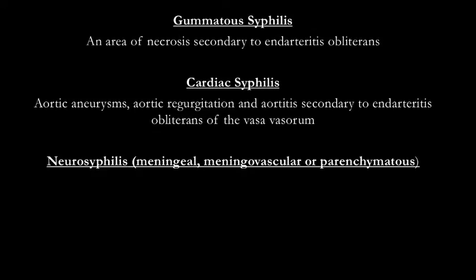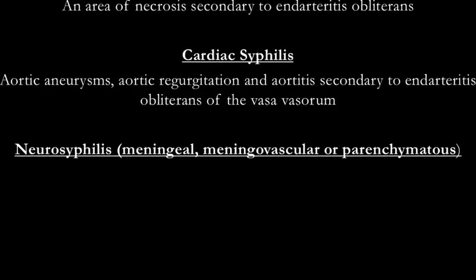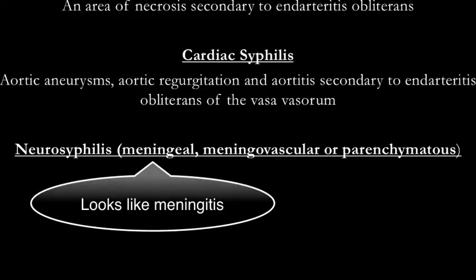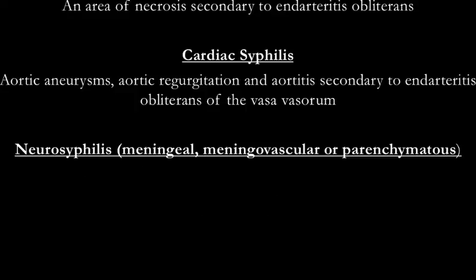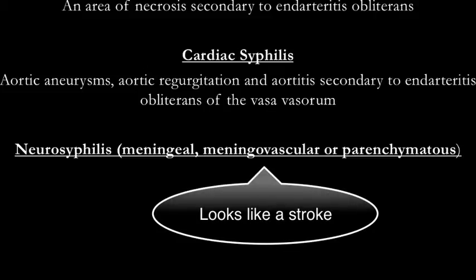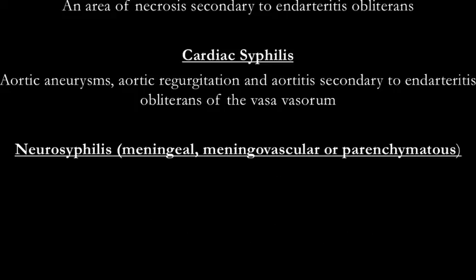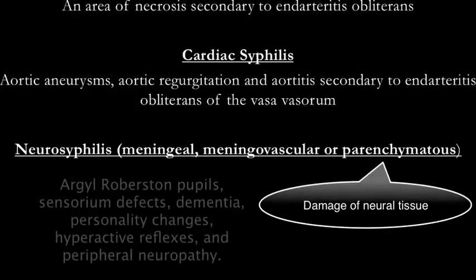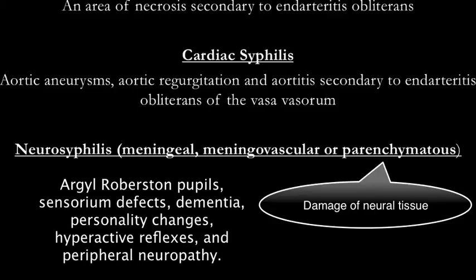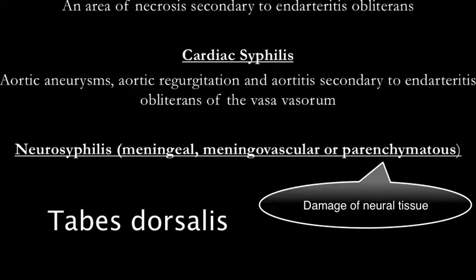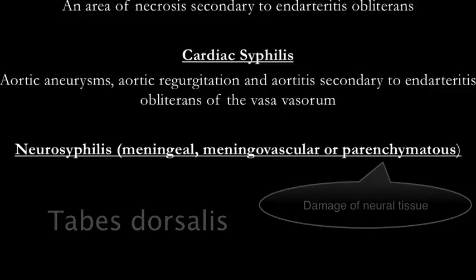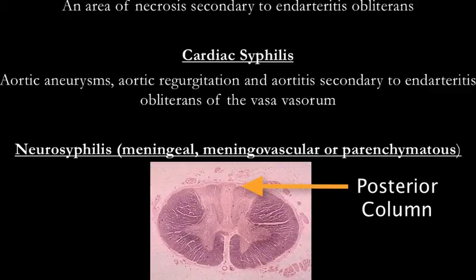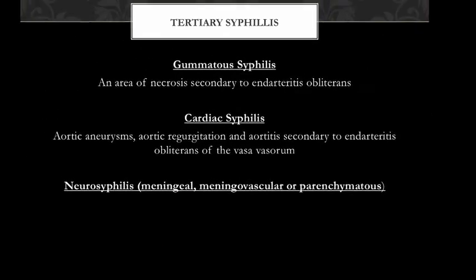Neurosyphilis has three types: meningeal, meningovascular, and parenchymatous. Meningeal syphilis looks like meningitis with headaches, nausea, vomiting, and neck stiffness, and may follow secondary syphilis. Meningovascular syphilis most often presents as an ischemic stroke, usually involving the MCA territory. Parenchymatous syphilis involves damage to actual neural tissue: Argyll Robertson pupils, sensorium defects such as hallucinations and illusions, declines in intellect, personality changes, hyperactive reflexes, and peripheral neuropathies causing impotence and bladder disturbances. Tabes dorsalis — loss of neurons in the posterior columns, dorsal roots, and dorsal root ganglia — leads to a wide, wobbly, ataxic gait and foot drop.